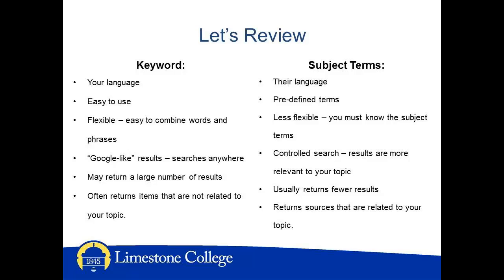Keyword searches often return sources that are not related to your search. Subject term searches use controlled vocabulary — their language, the language of the database. Subject terms are predefined terms used to describe ideas, concepts, objects, activities, classes of people, academic subjects, etc. Subject terms are less flexible; this can be difficult if you don't know the exact subject terms. Subject terms provide a controlled search. The database searches for words in the descriptor or subject field, and search results are more relevant. Subject term searches usually return fewer results than a broad keyword search and are more relevant, returning sources related to your search, although you may be required to use limiters to focus on the topic that you are interested in.